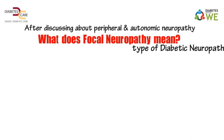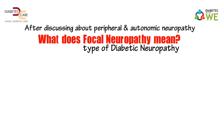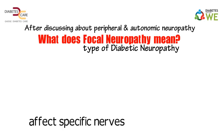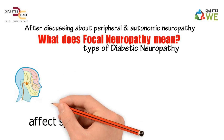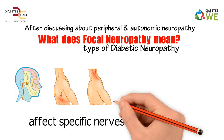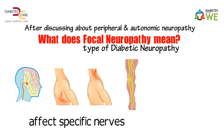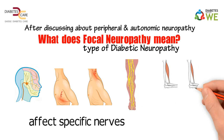Focal neuropathy is a type of diabetic neuropathy that can appear suddenly and affect specific nerves, most often in the head, torso, or leg. It causes muscle weakness or pain.